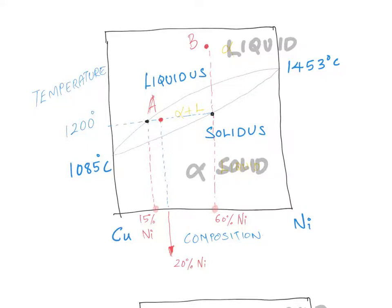From the perpendicular lines dropped to the x-axis, we can read off the compositions. The composition of the liquid phase is 15% nickel and 85% copper. The composition of the solid phase is 60% nickel and 40% copper. So to summarize: draw a tie line, find the points where it intersects the liquidus and solidus, drop perpendiculars from those points, and read the composition of each individual phase from the x-axis.